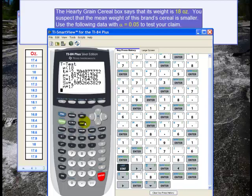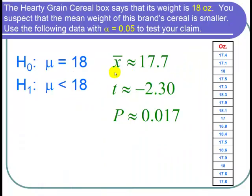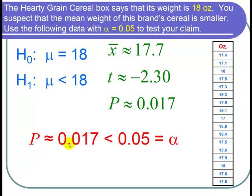Let's go back to the PowerPoint. The calculator gave us that the sample mean was 17.7, the test statistic T was negative 2.30, and the p-value was about 0.017. I'm going to use the method of p-values to test my claim. Alpha is 0.05. Our p is 0.017, which is less than 0.05. And if p is less than alpha, then that means we reject the null hypothesis.